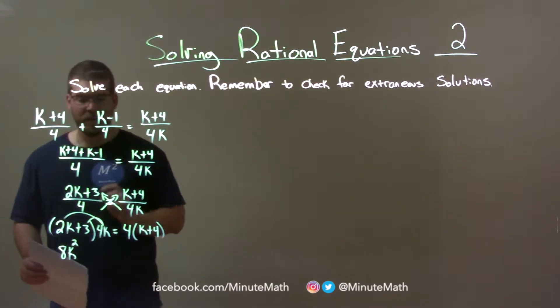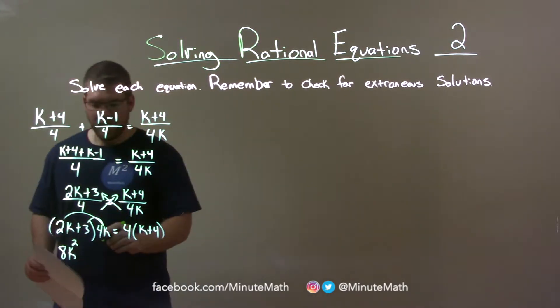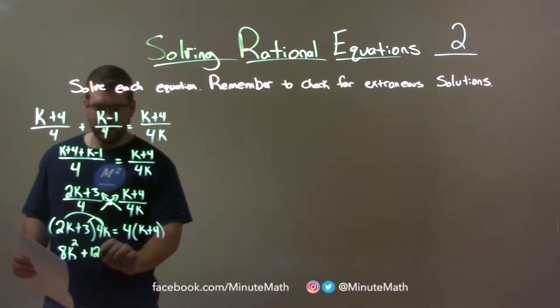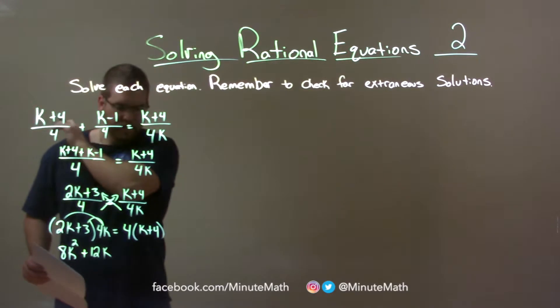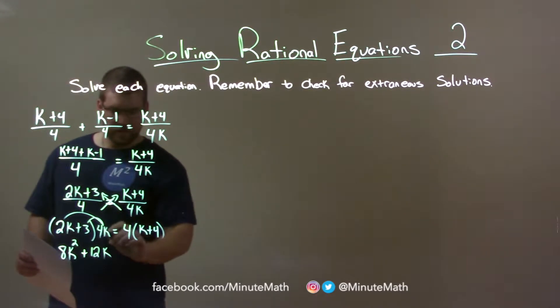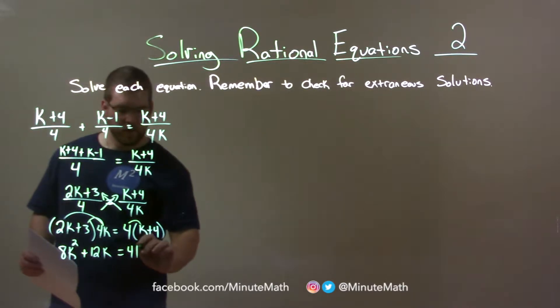Then 4k times the 3 here and that's going to be plus 12k. We have 12k and then we do the same thing with the 4. 4 times k, 4k and 4 times 4 is 16.